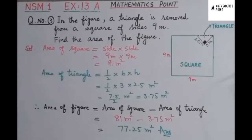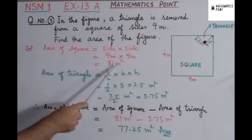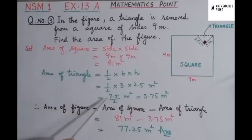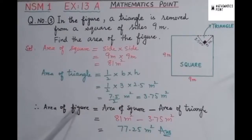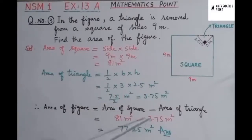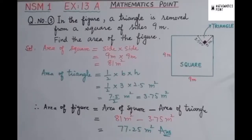I hope you have easily understood this question. In this question, we found the area of the square, then the area of the triangle to be removed, and then subtracted 3.75 meters squared from 81 meters squared to get 77.25 meters squared as the area of the figure. Insha'Allah we will meet in the next video. Take care. Allah Hafiz.